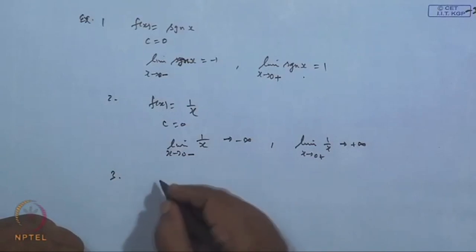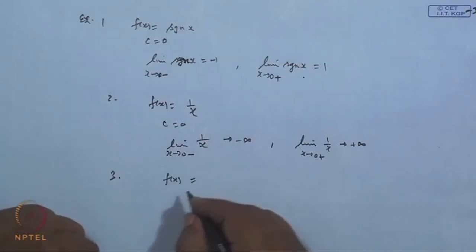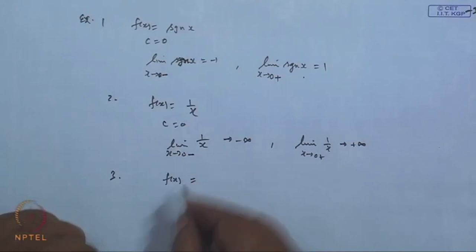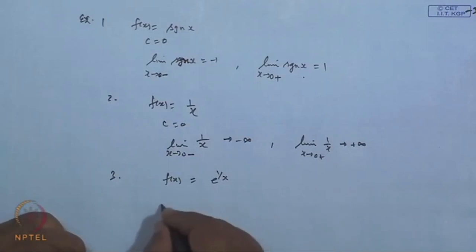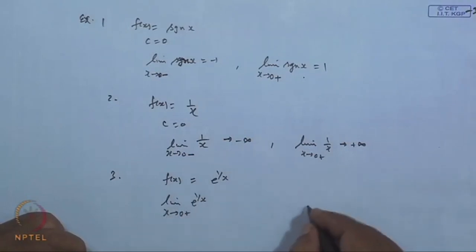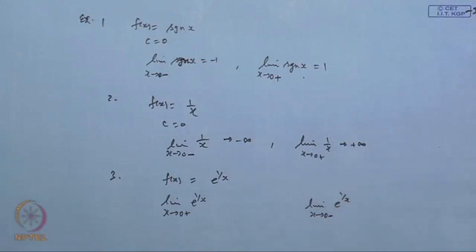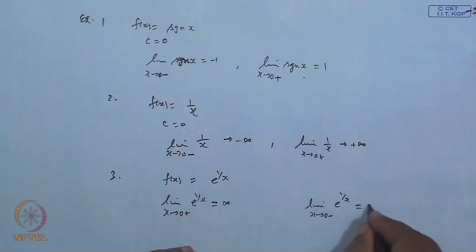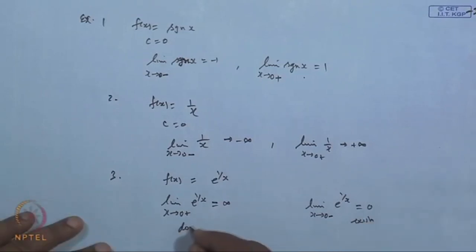Third case: consider f(x) = e^(1/x). Then lim(x→0⁺) e^(1/x) = ∞, while lim(x→0⁻) e^(1/x) = 0. So the left-hand limit exists (equals 0), but the right-hand limit does not exist as a finite number — it goes to infinity.